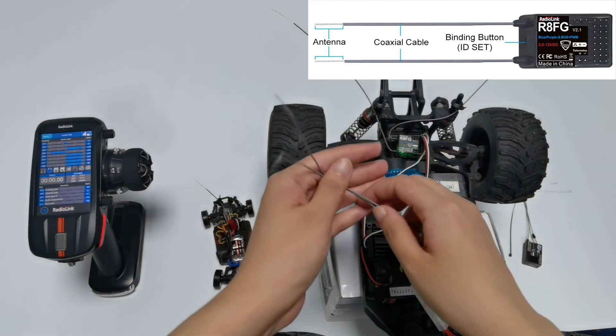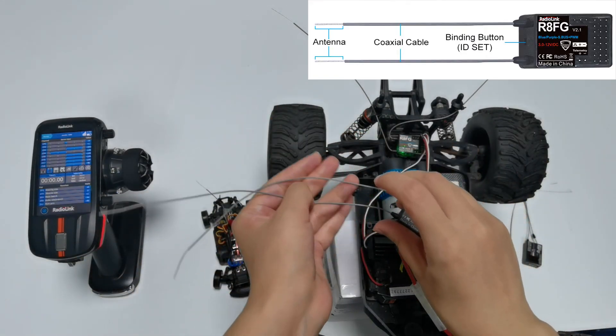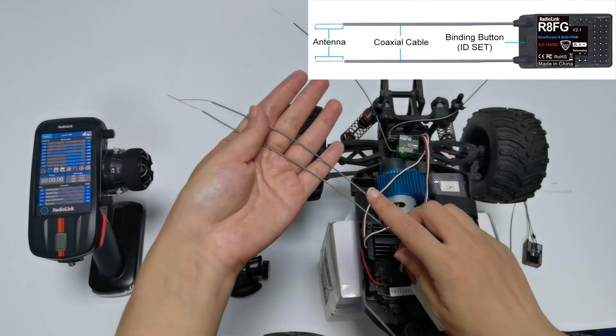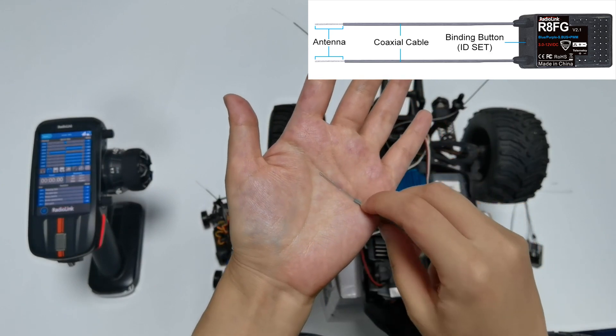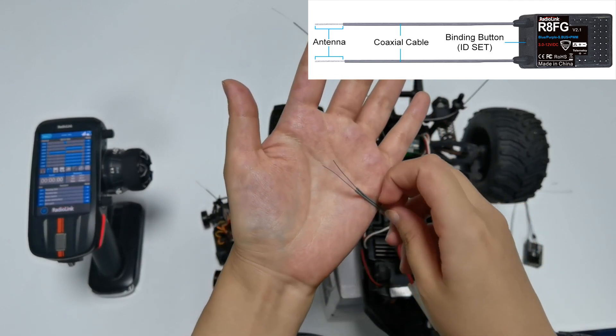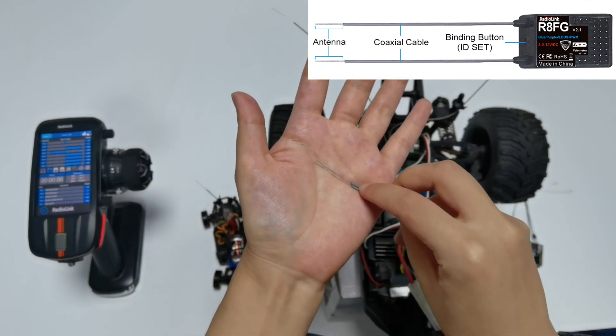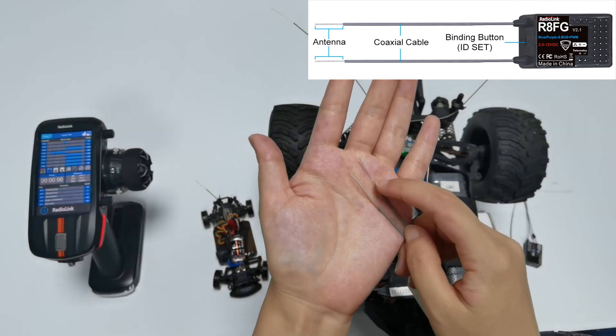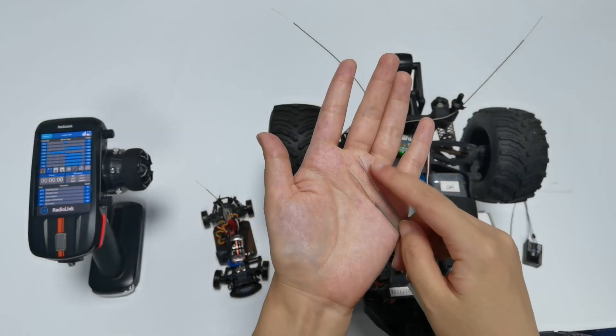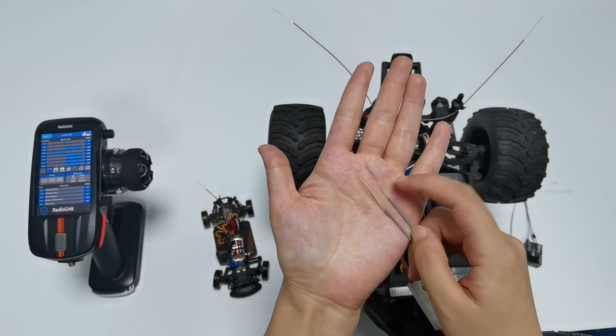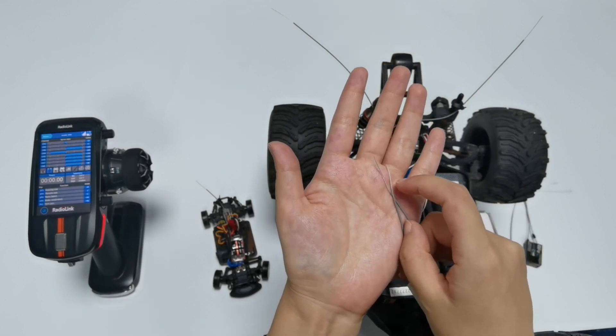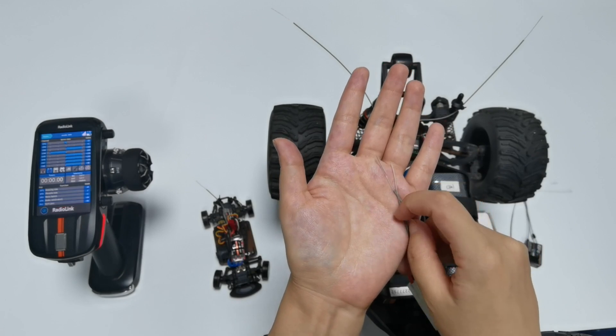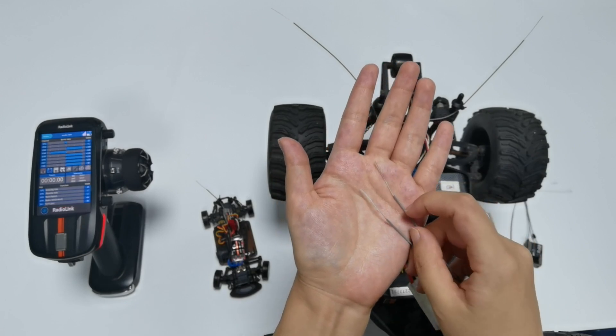The green line on receiver is coaxial cable, while the transparent line with a length about 3 cm at the top is the antenna. If the transparent line is broken or damaged, it will directly affect the control distance. If any abnormality is found, please replace the receiver antenna in time.